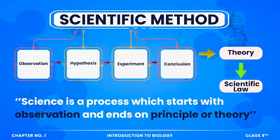बल्कि हम देखते हैं, इन observations की base पर हम एक hypothesis draw करते हैं, यानि कि مفروضہ قائم کرتے ہیں. ہمارا مفروضہ سہی ہے یا غلط ہے، اس مفروضے کو ہم experiment سے گزارتے ہیں. اگر ہمارا مفروضہ experiments کی روشنی میں سہی ثابت ہوتا ہے تو وو principle یا theory کہلاتا ہے. اس کا مطلب ہوا کہ science ایک ایسا عمل ہے جو observation سے start ہوتا ہے اور principle یا theory پے ختم ہوتا ہے.